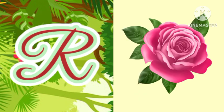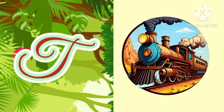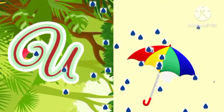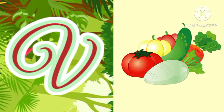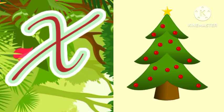S for ship, T for train, U for umbrella, V for vegetables, W for watermelon, X for egg mastery.